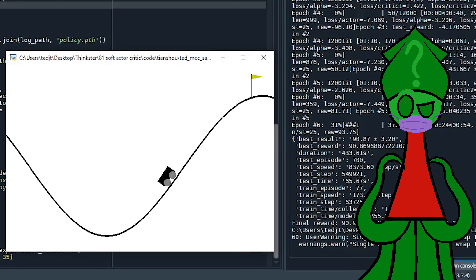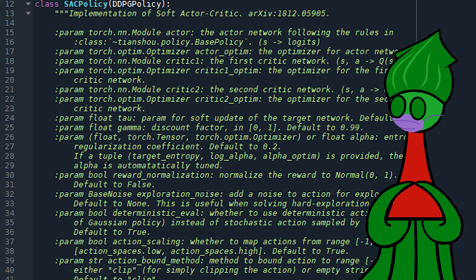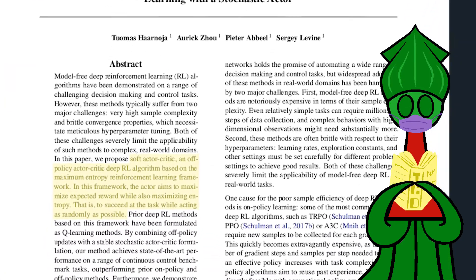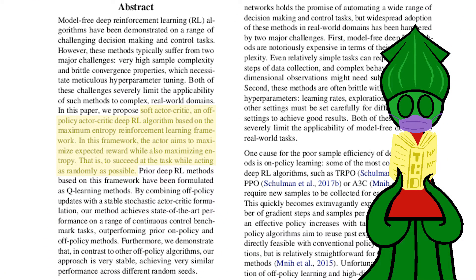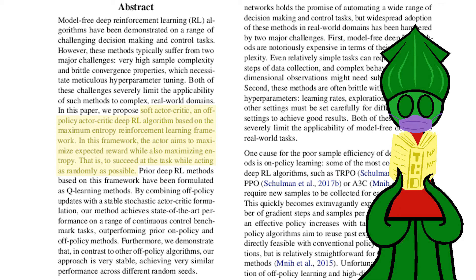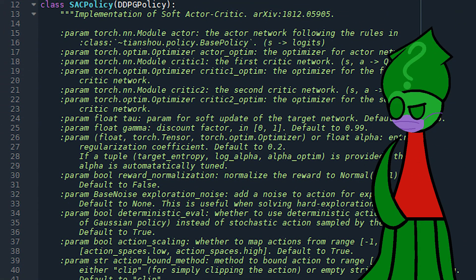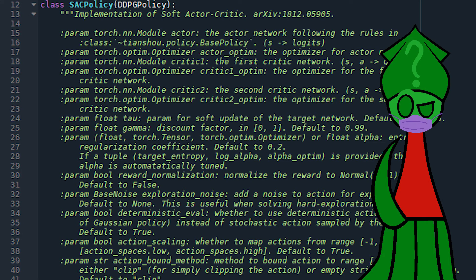So what's Soft Actor-Critic? I've described actor-critic before, but what does it mean to be 'soft'? Let's look at the paper proposing the Soft Actor-Critic. This part of the abstract sums it up: the Soft Actor-Critic is an off-policy actor-critic algorithm based on the maximum entropy reinforcement learning framework. In this framework, the actor aims to simultaneously maximize expected return and entropy — that is, to succeed at the task while acting as randomly as possible. This helps provide a better variety of data by encouraging exploration. I'm still not sure why it takes two critics in TianQi, though. I think I'm starting to understand this stuff.